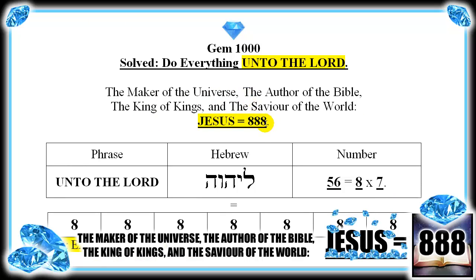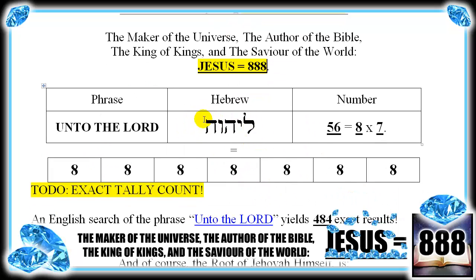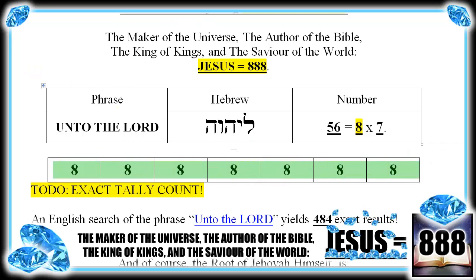Jehovah Gah — this phrase, these exact Hebrew letters, occur countless times in the Hebrew Scripture: unto the Lord, do things unto the Lord. It is exactly 56, which divides by 8 perfectly — a set of 7 eights. Seven is the number of a set of like things, and here we have a set of 7 eights. To the glory of Jesus equals 888.